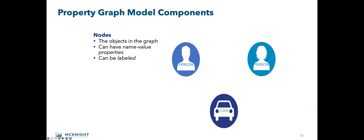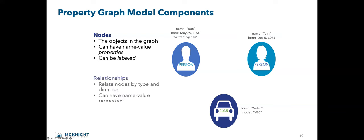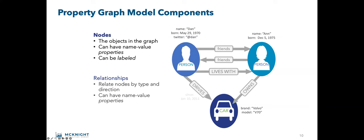One of the most common NoSQL databases is the property graph, which are fun to work with. These have nodes — the objects in the graph, like Dan and a Volvo car — and relationships between the nodes. Examples include Neo4j, JanusGraph, TigerGraph, Amazon Neptune, and OrientDB. This is the easiest of the graph models to work with. There are a couple of major graph models I'll share.